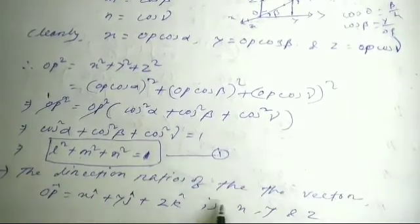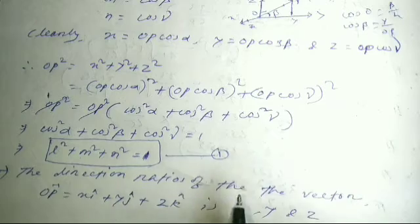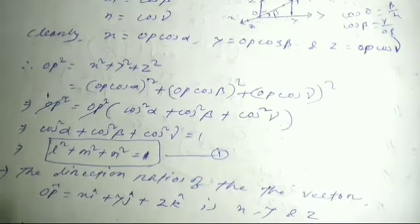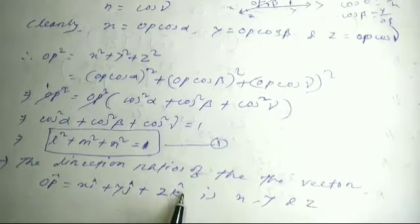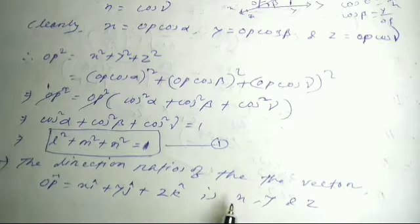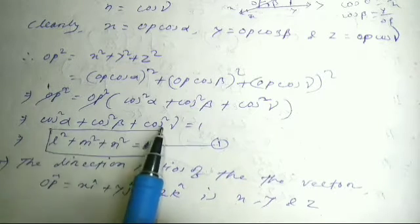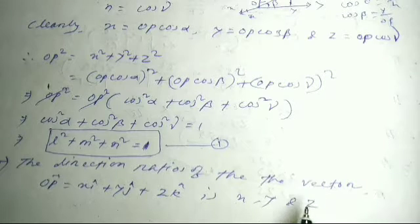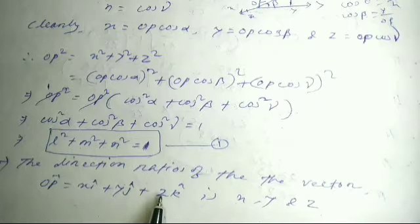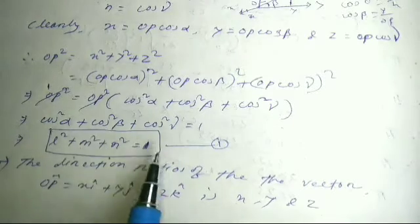The direction cosines of the vector effectively give us x i-hat plus y j-hat plus z k-hat as the position vector. So if OP vector equals x i-hat plus y j-hat plus z k-hat, then the direction ratio of the vector is x, y, z and the direction cosine is l, m, n — that is cos alpha, cos beta, and cos gamma — along the x-axis, y-axis, and z-axis respectively.